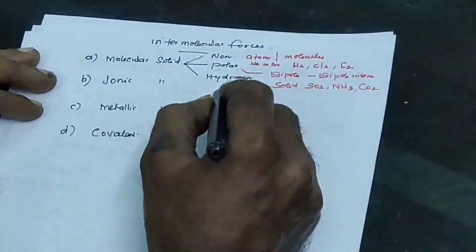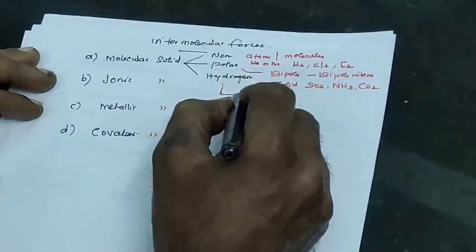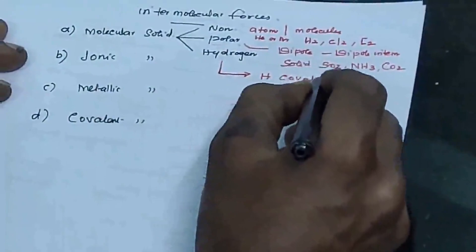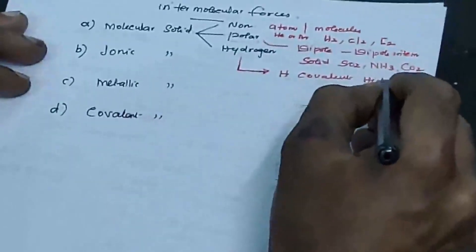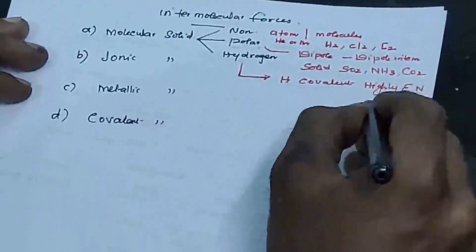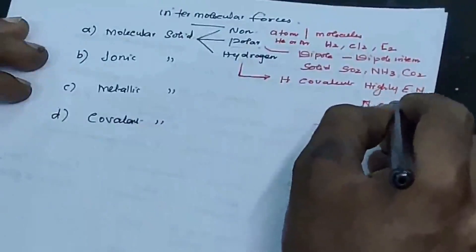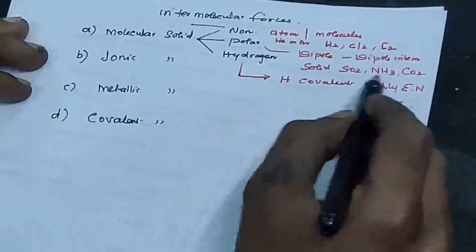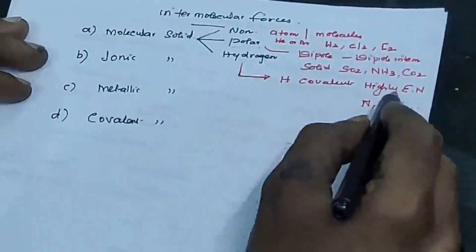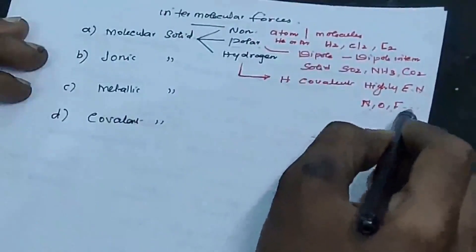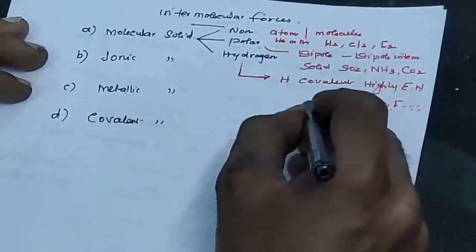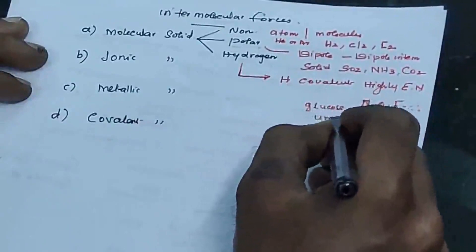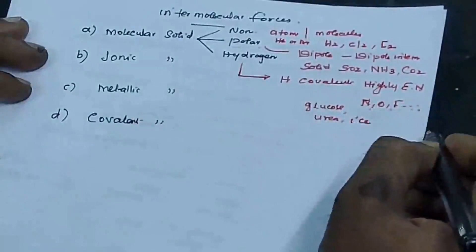In hydrogen-bonded molecular solids, hydrogen is covalently bonded with highly electronegative atoms such as nitrogen, oxygen, or fluorine, forming hydrogen bonds. Examples are glucose, urea, and solid form of water, that is ice.